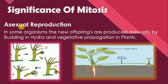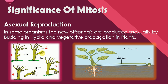Last is asexual reproduction. In some organisms, new offspring are produced asexually — by budding in hydra, and by vegetative propagation in plants. Asexual reproduction is reproduction in which no sex organs are involved; instead, organisms use their vegetative parts to form new organisms. In hydra, cells undergo repeated mitotic divisions, producing an outgrowth called a bud. The bud grows and develops through mitosis, and when it matures, it detaches from the parent body, forming a new hydra.